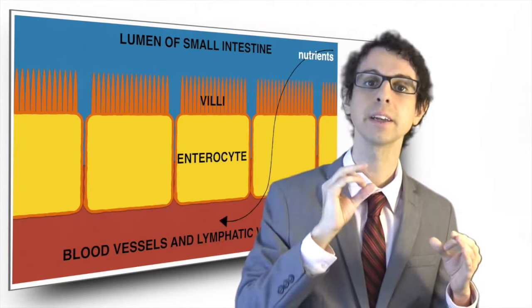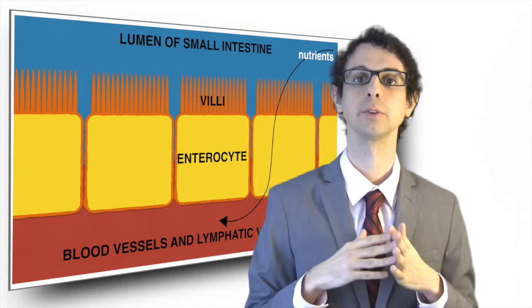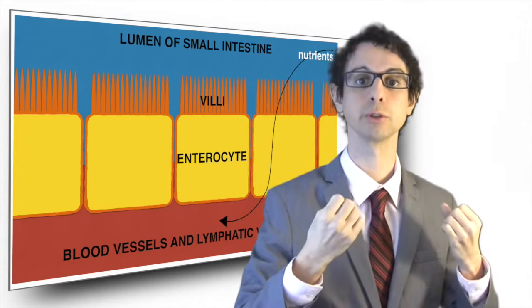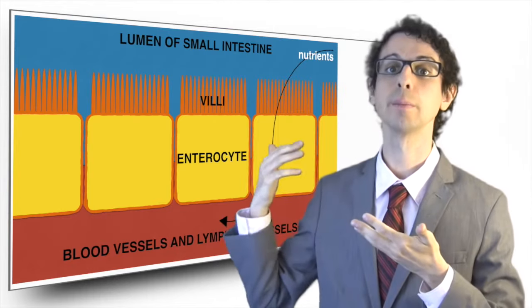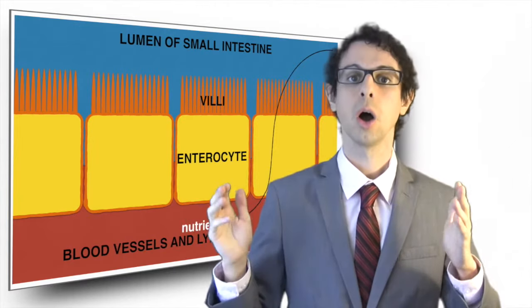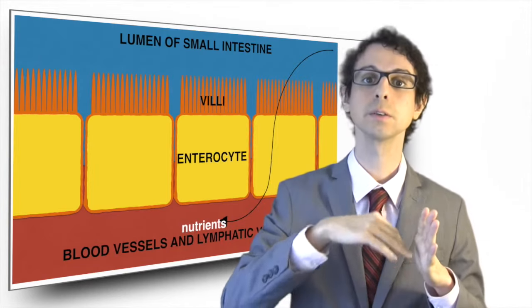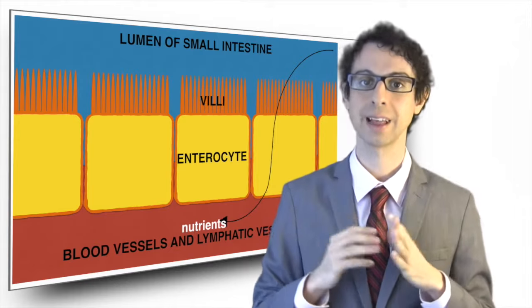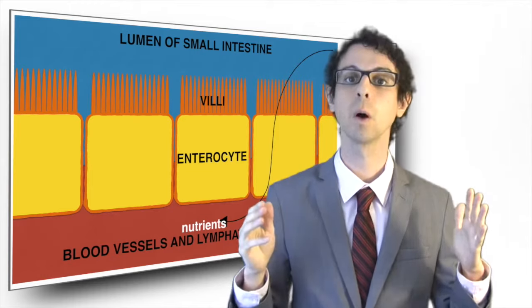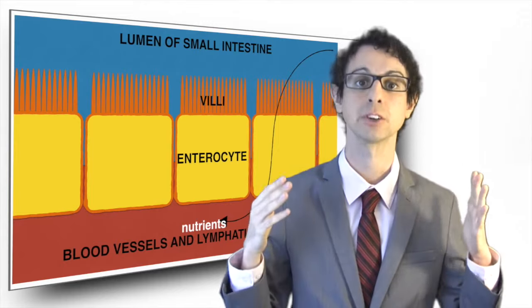These villi are made of specific intestinal cells called enterocytes, that are specialized for absorption. On one side, they face the small intestine where they take nutrients from. On the other side, they face our blood vessels and lymphatic vessels, to which they deliver the nutrients they absorb. On the side facing the intestine, the membrane of these cells is folded into small projections called microvilli, that further increase the absorptive surface and make the intestinal walls look like a brush. We also refer to these absorptive structures with the name brush border.